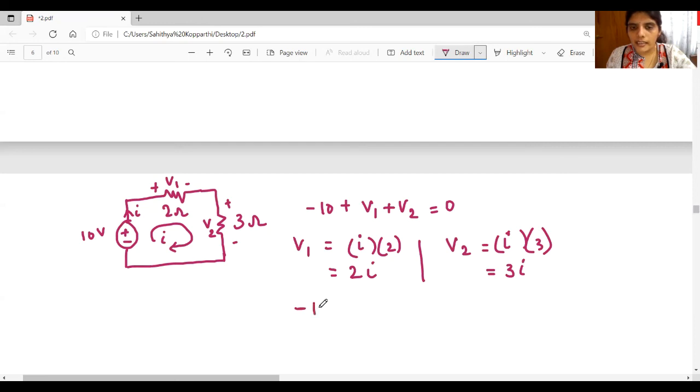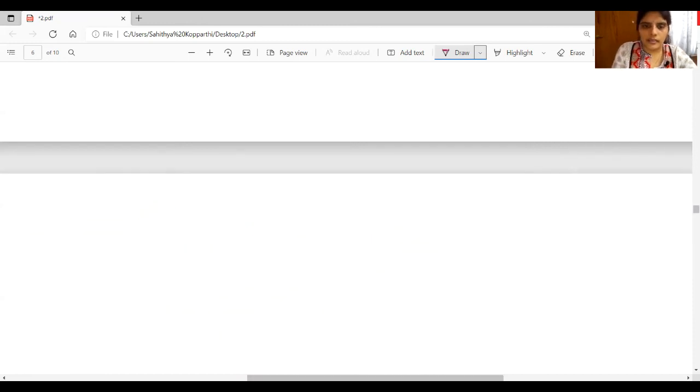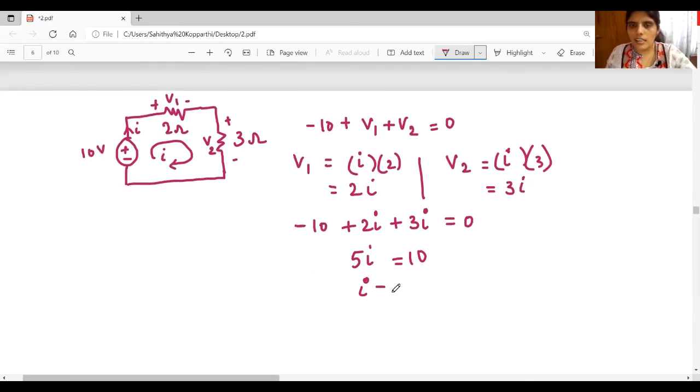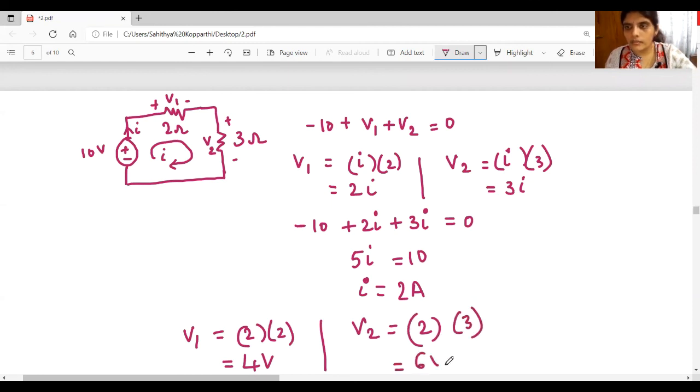Minus 10 plus 2i plus 3i is equal to zero. That implies 5i is equal to 10, i is equal to 2 amperes. So substitute i, V1 will get 2 into 2 that is 4 volts and V2 is 2 into 3 that is 6 volts. Thank you.